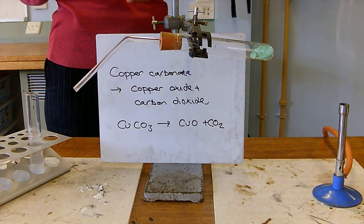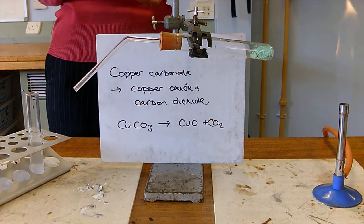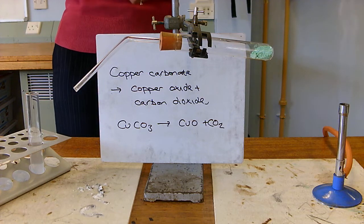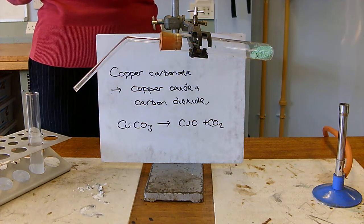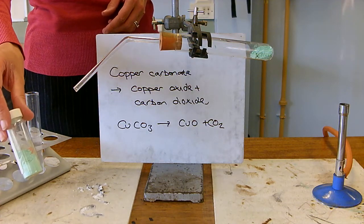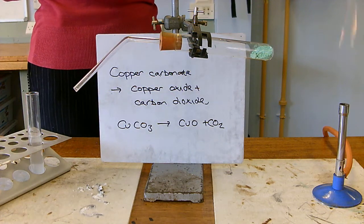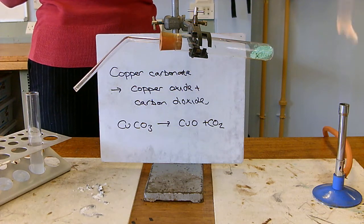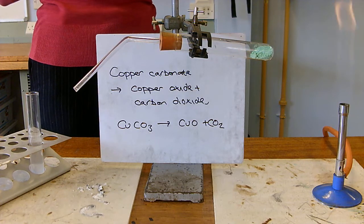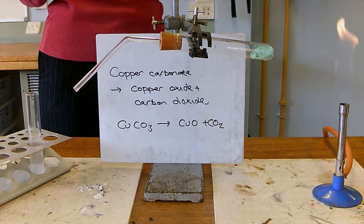So, some molecules, when we heat them up, we can break them down, we can split them into smaller molecules. I've got here some copper carbonate, it's a lovely green powder. And you can see from the formula on the card that copper carbonate is made of one copper atom, one carbon atom and three oxygen atoms.